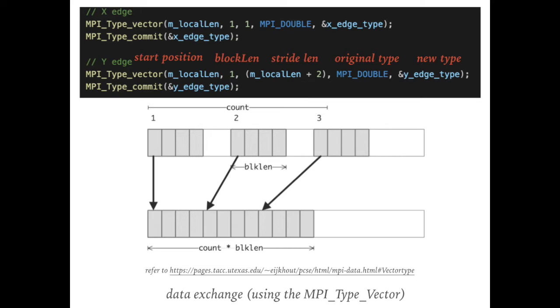Therefore, we can use the MPI type vector to customize the data layout. For this example, we define the Y edge type as the MPI type vector. The block number is 1, and the stride length is n plus 2. By this way, we can extract the elements at the Y direction and put it together in a logical view.